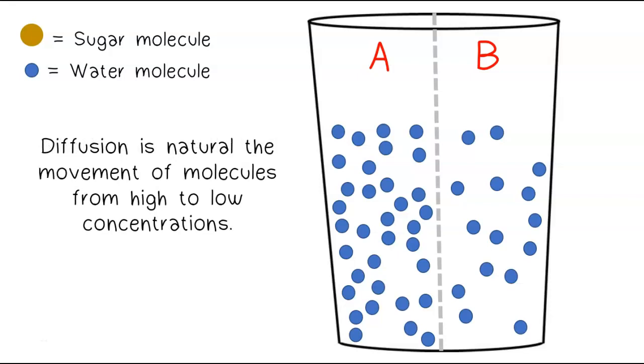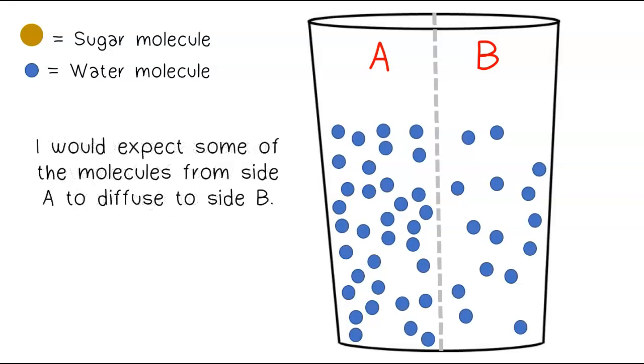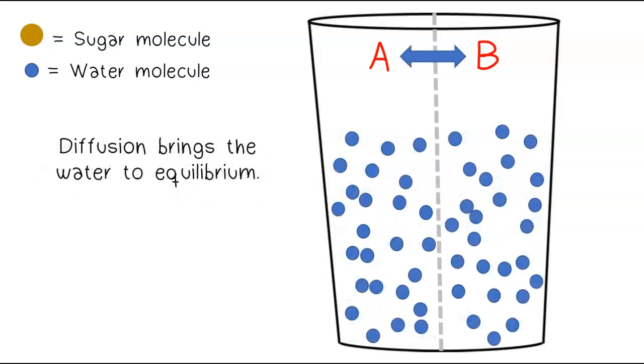Diffusion is the natural movement of molecules from high to low concentrations. I would expect some of the molecules from side A to diffuse to side B. Diffusion brings the water to equilibrium.